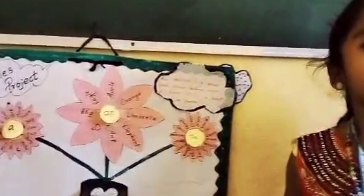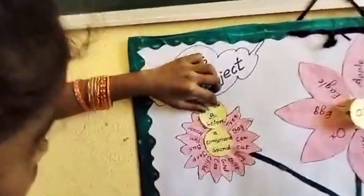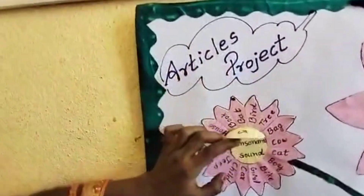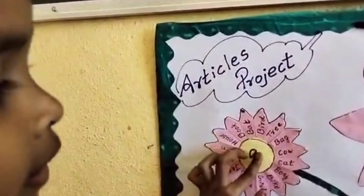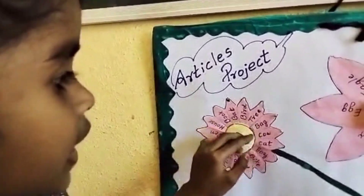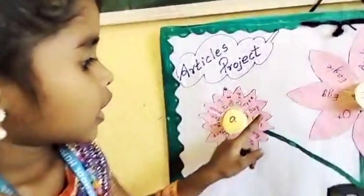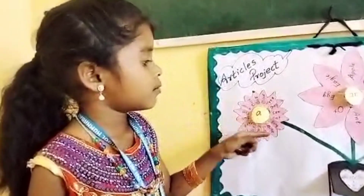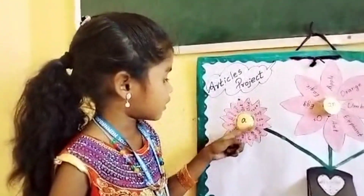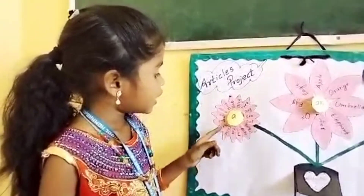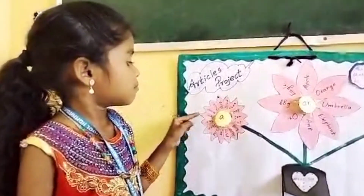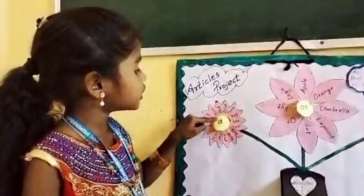When do we use A? We use A before a consonant sound. Example: a tree, a bed, a cow, a cat, a boat, a bike, a girl, a car, a child, a jeep, a bus, a pet, a house, a book.